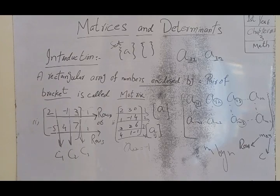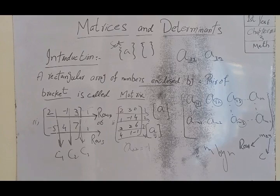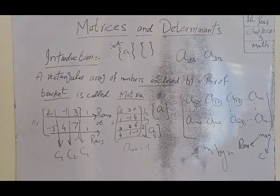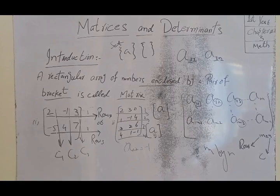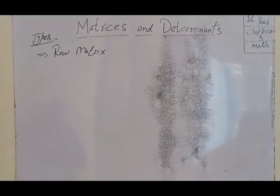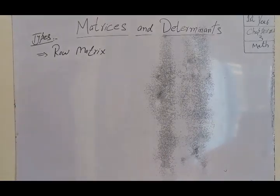Next, we will learn about the types of matrices. There are many types. We will start with the row matrix, also called a row vector.